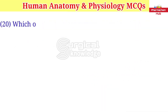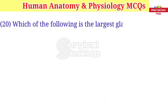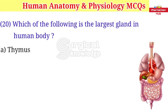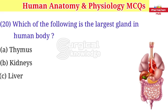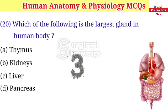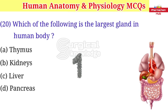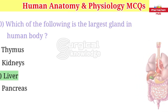Which of the following is the largest gland in the human body? A. Thymus B. Kidneys C. Liver D. Pancreas. Right answer is liver.